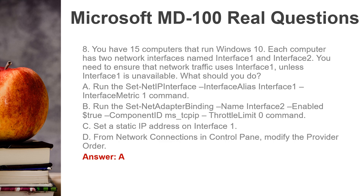Question 8. You have 15 computers that run Windows 10. Each computer has two network interfaces named Interface 1 and Interface 2. You need to ensure that network traffic uses Interface 1, unless Interface 1 is unavailable. What should you do? A. Run the Set-NetIPInterface -InterfaceAlias Interface1 -InterfaceMetric 1 command. B. Run the Set-NetAdapterBinding -Name Interface2 -Enabled $TRUE -ComponentID MS_TCPIP -ThrottleLimit 0 command. C. Set a static IP address on Interface 1. D. From Network Connections in Control Panel, modify the Provider Order. Answer: A.